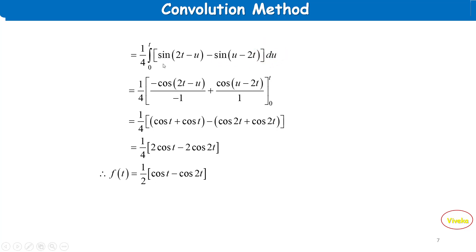Integrating with respect to u: −cos(2t−u)/(−1) + cos(u−2t)/1, evaluated from 0 to t. Applying limits and simplifying: cos(t) − cos(2t) terms combine, and the final answer is f(t) = (1/2)(cos(t) − cos(2t)).